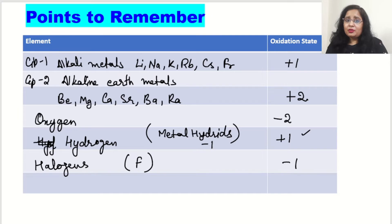The next and the last point to be remembered is all the atoms in their elemental state will always have the oxidation state 0. Like oxygen in O2, sulfur in S8, like phosphorus in P4. These are the elemental states and in this state the oxidation state will always be 0.